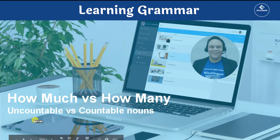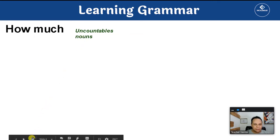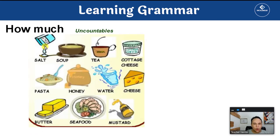We will learn about uncountable versus countable nouns. In English, we use how much for uncountable nouns. We have some examples of uncountable nouns. For example: salt, soup, tea, cottage cheese, pasta.